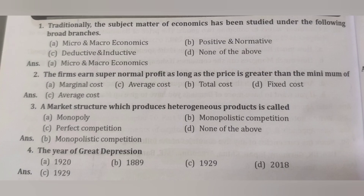Traditionally, the subject matter of economics has been studied under micro and macroeconomics. A firm earns supernormal profit as long as the price is greater than the minimum of average cost. A market structure which produces heterogeneous products is monopolistic competition. The year of the Great Depression is 1929.